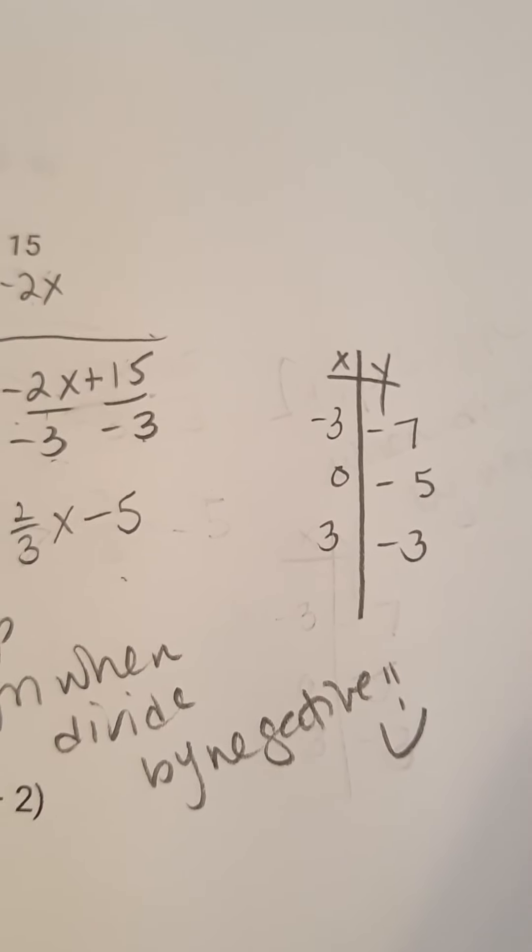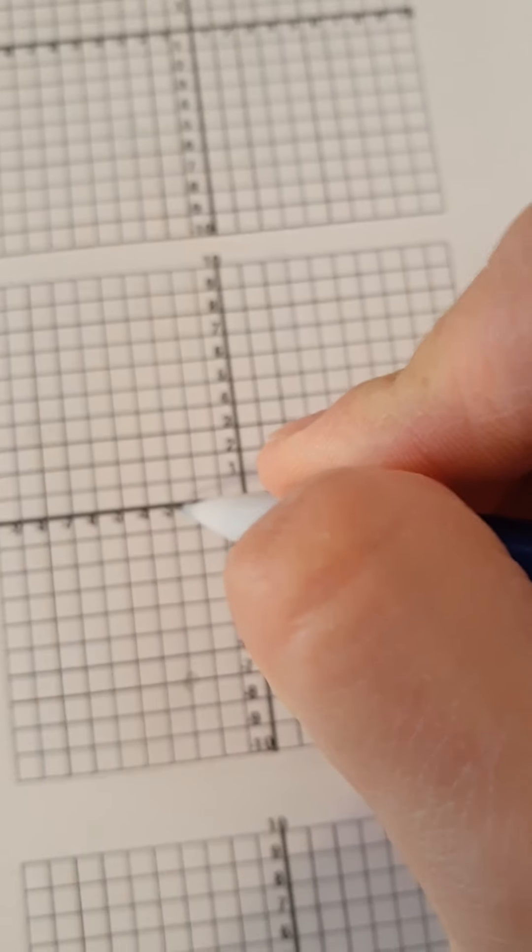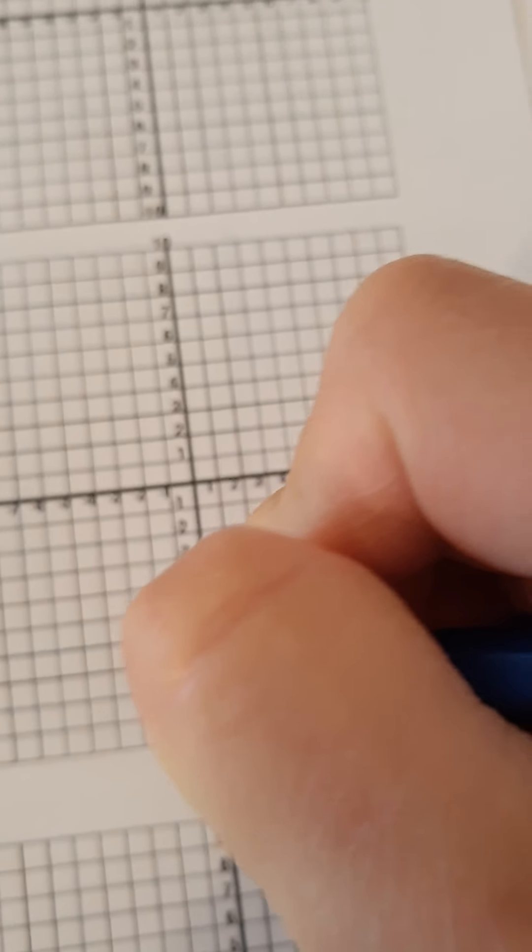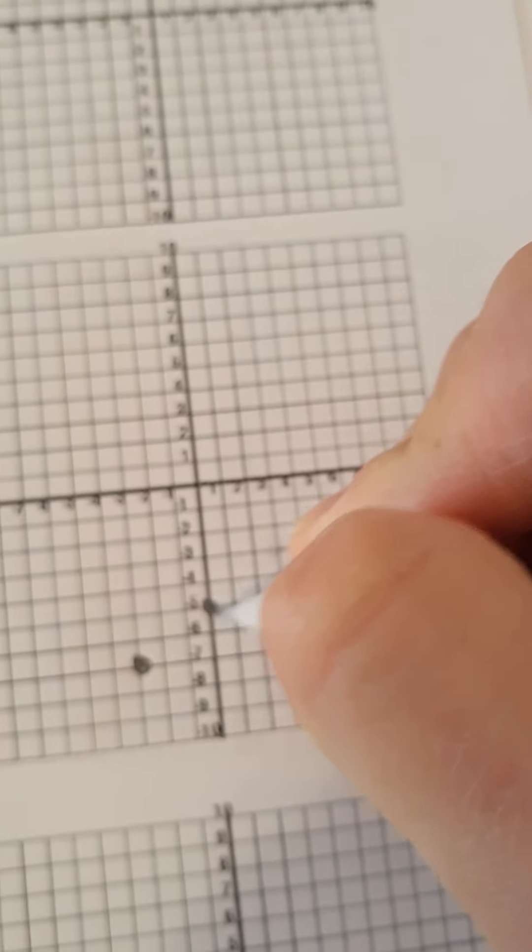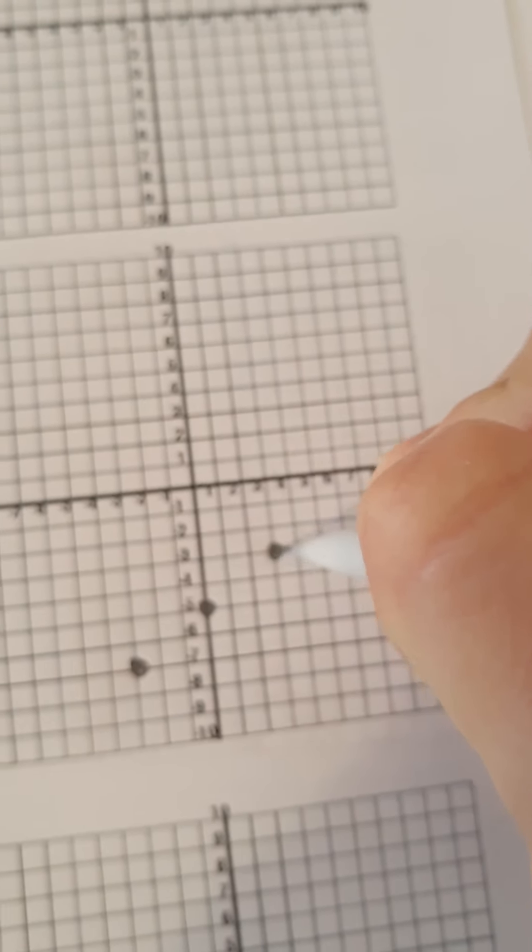So then you got to plot them: negative 3, negative 7, 0, negative 5, and 3, negative 3. So now we have to make some notes for ourselves.